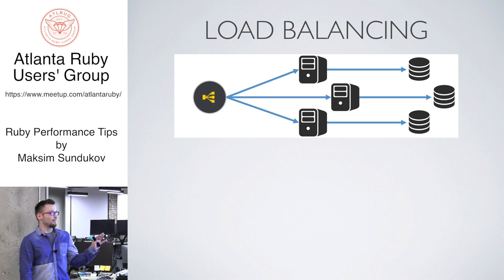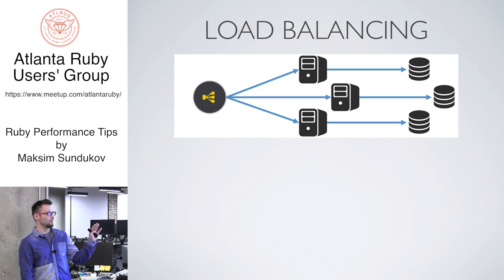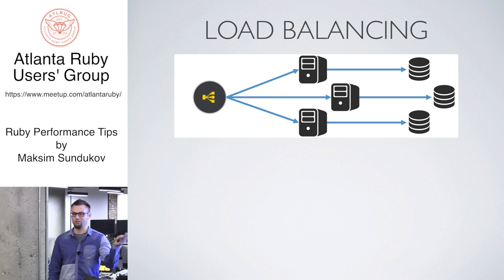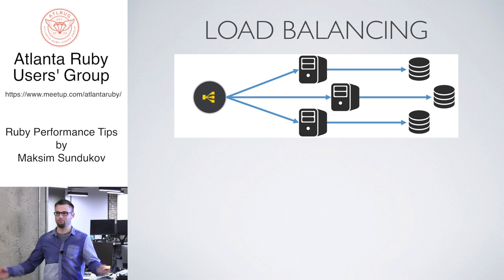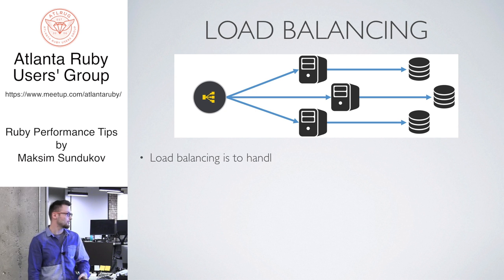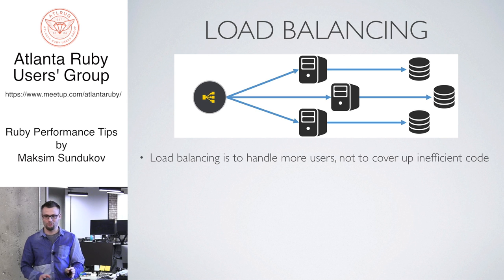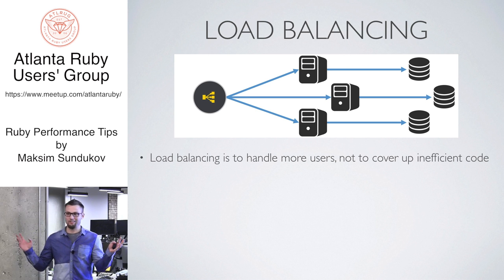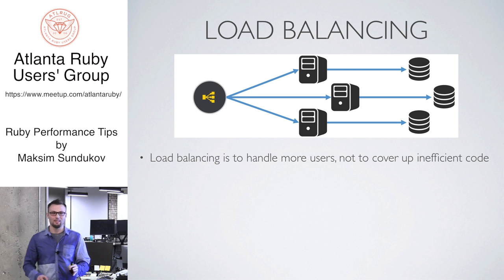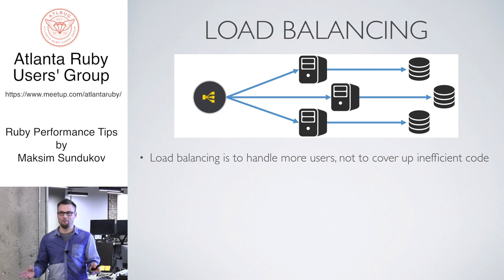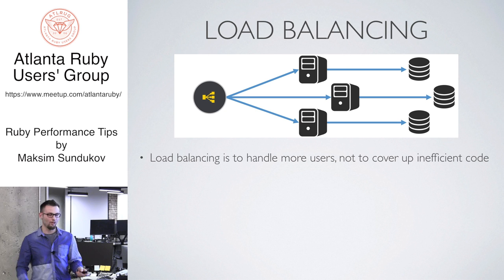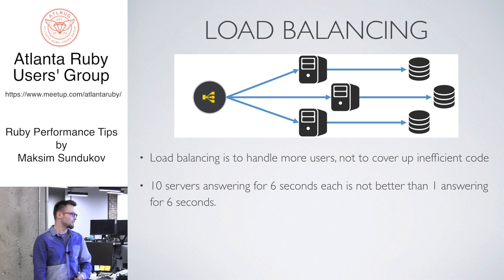This is something I just want you to understand. Sometimes people say, oh, just throw more CPU or memory, or do load balancing, and things will magically work faster. But load balancing is to handle more users, not to cover up inefficient code. If you have a million users, it's a good problem to have. If you have just a couple of them and things work slowly, it's not about users — so don't even think about this.